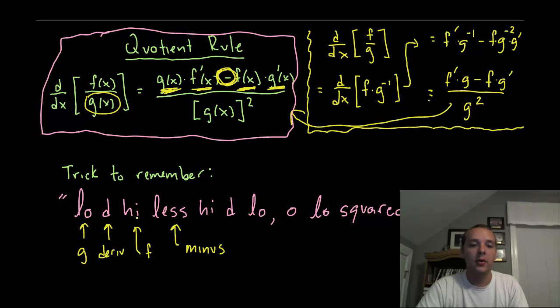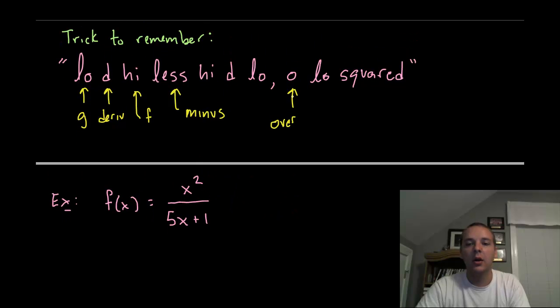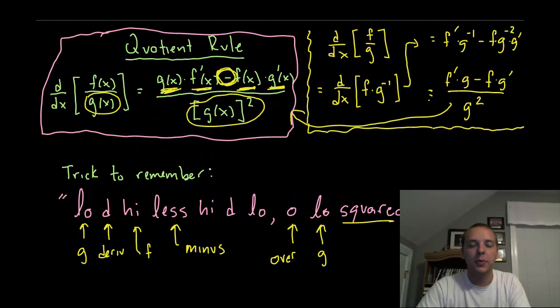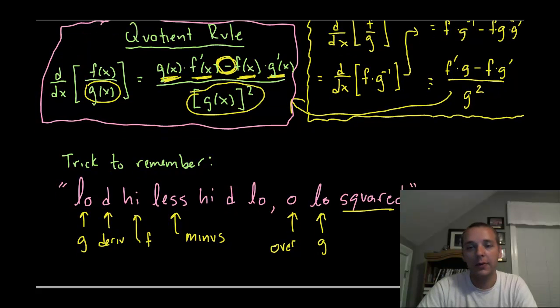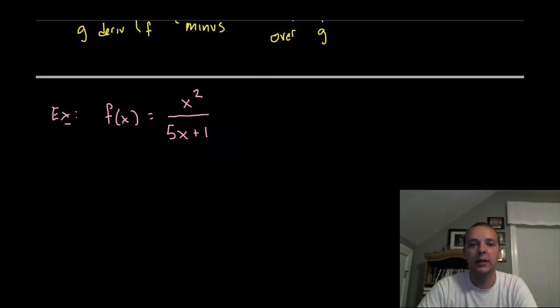You could say low d high less high d low and down below denominator squared must go, over g squared. Or the condensed version O, which stands for over, over the denominator squared. Remember that little phrase and you'll remember the quotient rule. Usually students and instructors say that as they're doing it.